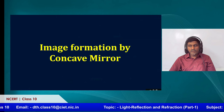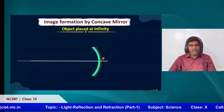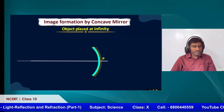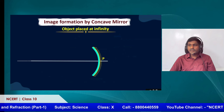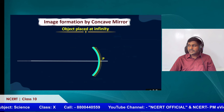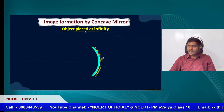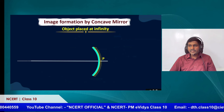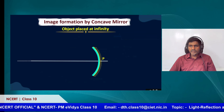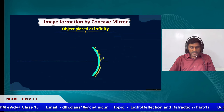Now let us create some image formation by a concave mirror. First, let us take an object placed at infinity. Infinity means a very distant object — for example, a distant tree outside a lab can be taken as infinity. If you take a concave mirror in the lab, a distant tree is an infinity point.